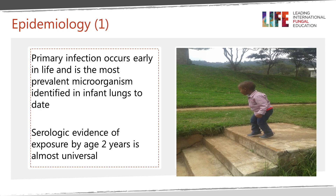Most infection occurs early in life, and Pneumocystis is the most prevalent organism found in infants' lungs. Almost everybody has been exposed by two years of age, so essentially we have all encountered it. If you have a bad upper respiratory tract infection you might pass it to somebody else, and if you develop cancer or HIV infection you are quite likely to transmit it. That is how it transmits.